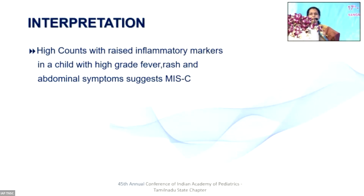Similarly, children with MISC have been dumped as appendicitis and children with appendicitis have been dumped as MISC. Many of them come with severe abdominal pain, vomiting, and loose stools that can mimic appendicitis. Just as during dengue season we say don't refer to the surgeon until you order a blood count, do not forget MISC which can mimic appendicitis.